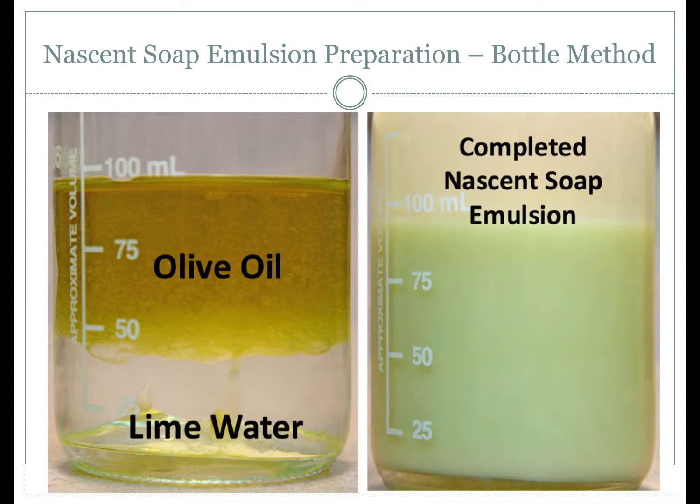To summarize: the bottle method is the quickest and easiest way to form a nascent soap emulsion, whereas the mortar method is used when additional solid insoluble ingredients need to be incorporated. Regardless of the method used, any nascent soap emulsion formed using lime water is only used externally, applied topically to the skin.